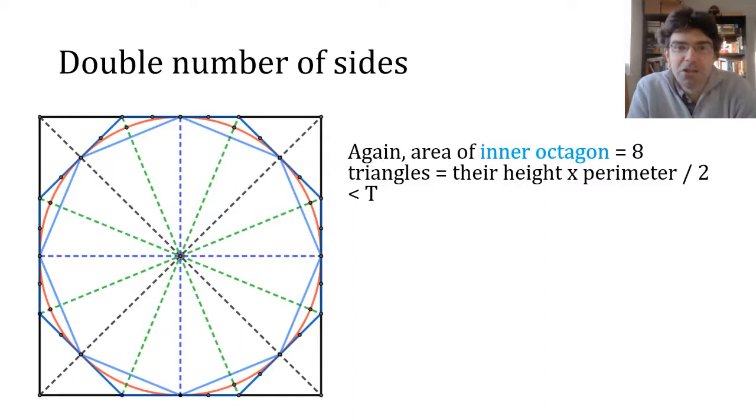Next what we do is double the number of sides, so this creates two octagons which are in blue. And just like before, their areas can be thought of as eight congruent triangles, so we can calculate the total area using the formula half of the height, which is the same in each, times the perimeter.